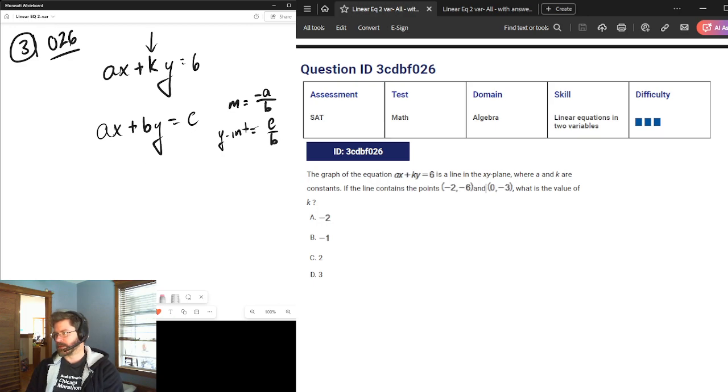So using that definition of the y-intercept, we know that the y-intercept is, the y-value is negative 3. So I know that 6, the value of c here, 6, divided by k, is equal to negative 3. All I'm doing is using that definition, plugging in 6 for c, and k for b.